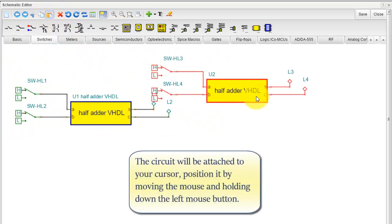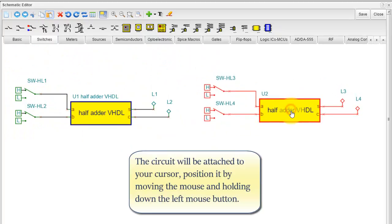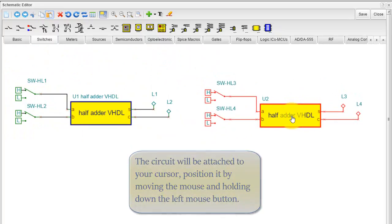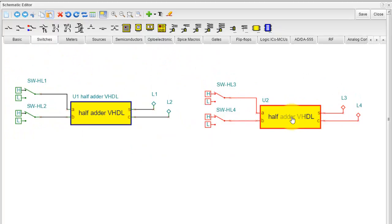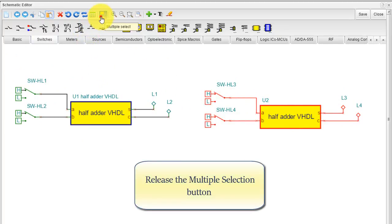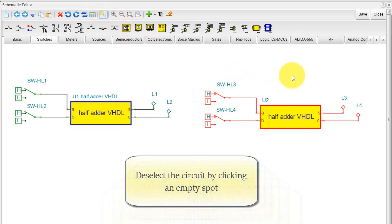The circuit will be attached to your cursor. Position it by moving the mouse and holding down the left mouse button. Release the Multiple Selection button. Deselect the circuit by clicking an empty spot.